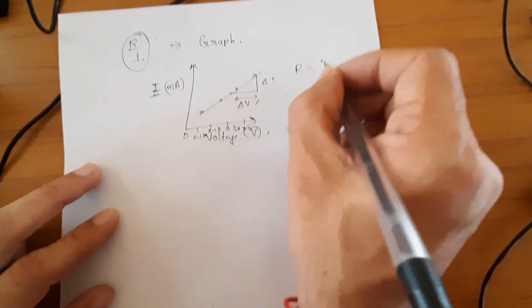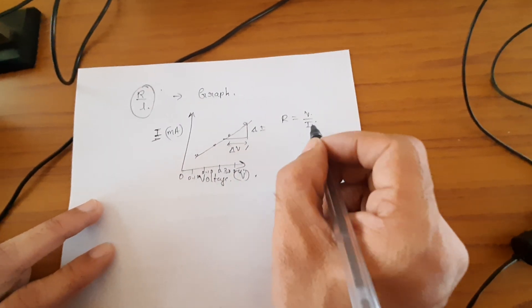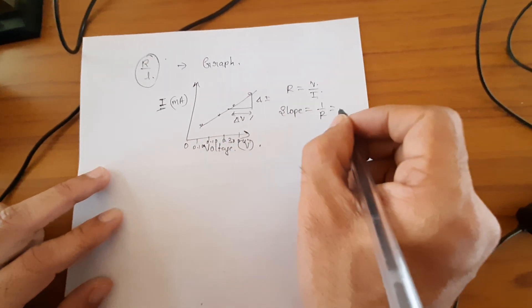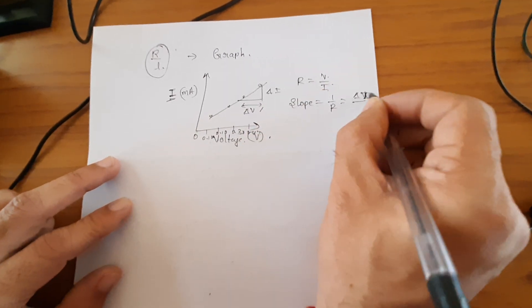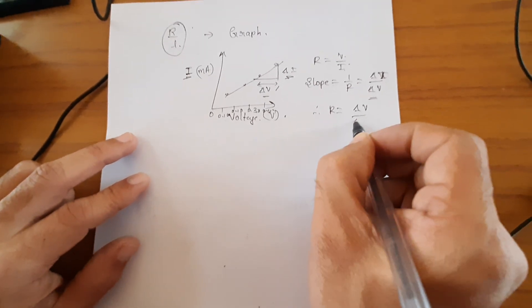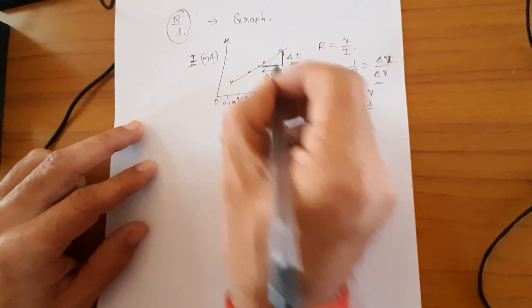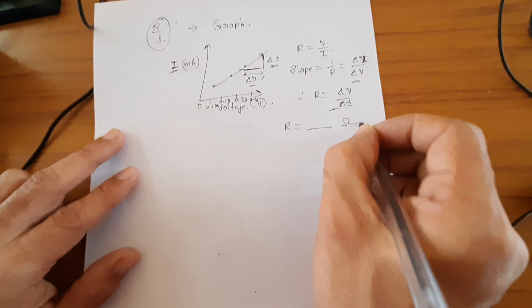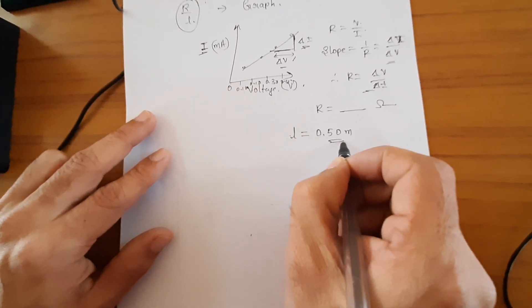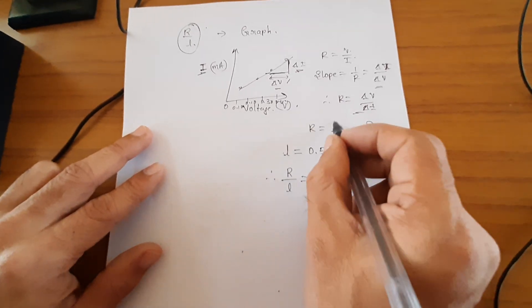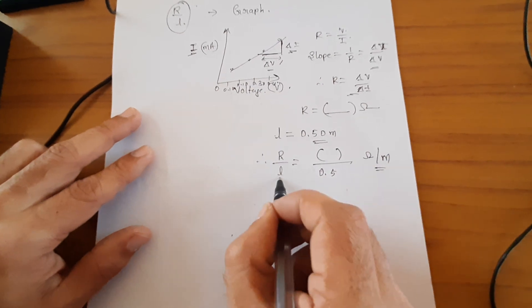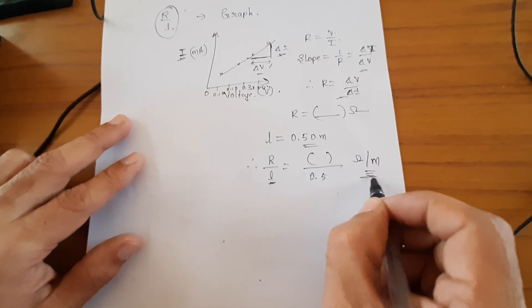You know that according to Ohm's law, R equals V divided by I. But here on the graph we have I divided by V, so the slope gives 1/R equal to delta I divided by delta V. Therefore R equals delta V divided by delta I — substitute those values and you get the resistance in ohms. Given the length of the wire, for example 0.50 meter, resistance per unit length equals R divided by 0.50, expressed in ohm per meter.